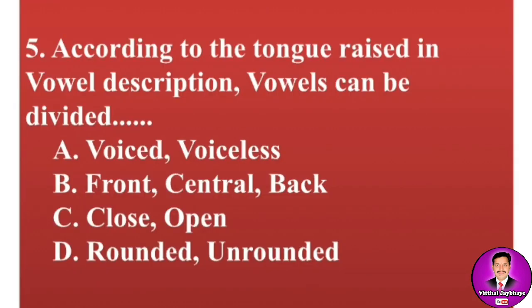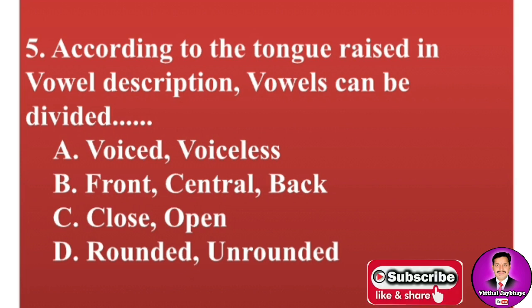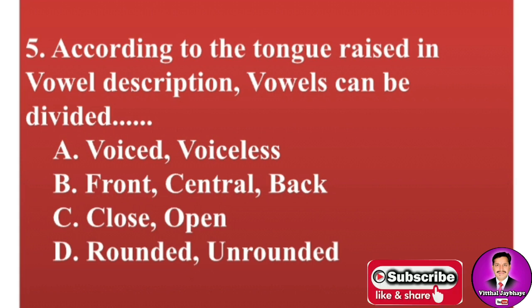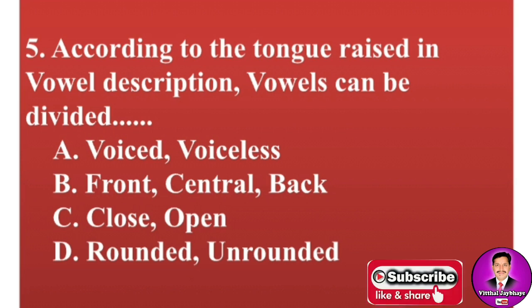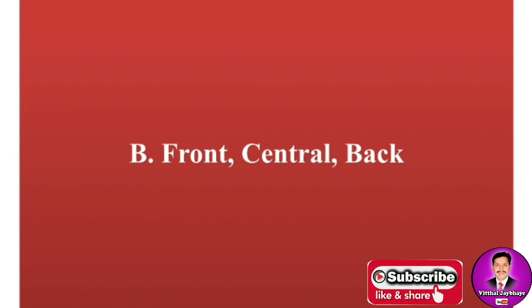Next MCQ: According to the part of the tongue raised in vowel description, vowels can be divided into — options are: A, voiced and voiceless; B, front, central, back; C, close, open; D, rounded, unrounded. The correct answer is B — front vowels, central vowels, and back vowels.